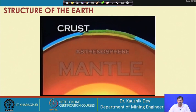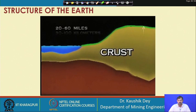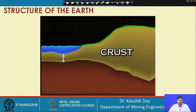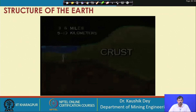After the mantle comes the earth crust, which is a very shallow layer. The lower continental crust is about 20 to 60 miles or 30 to 100 kilometers thick, sometimes varying from 60 to 100 kilometers. Under the ocean, the crust is a much thinner layer of rocky material similar to basalt, approximately 3 to 6 miles or 5 to 10 kilometers thick.